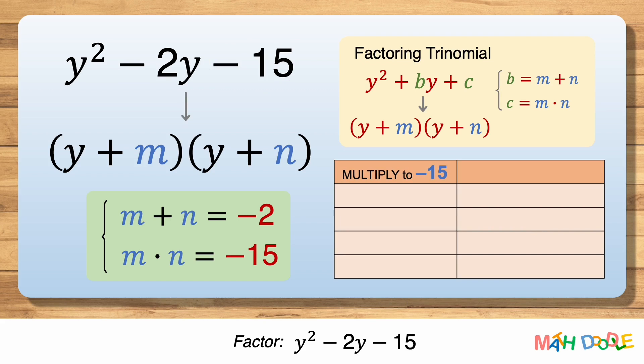First, let's think about all the combinations of two numbers that multiply to minus 15. 1 times minus 15 is minus 15. Minus 1 times 15 is minus 15. 3 times minus 5 is minus 15. And minus 3 times 5 is also minus 15.